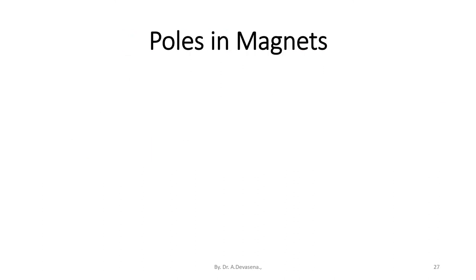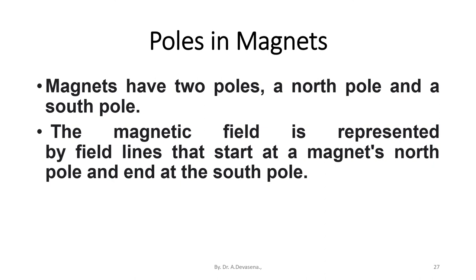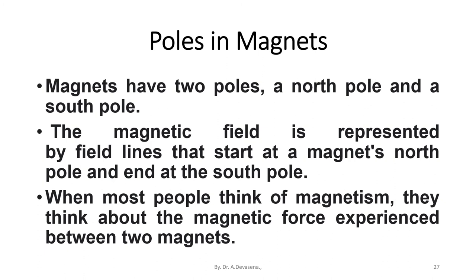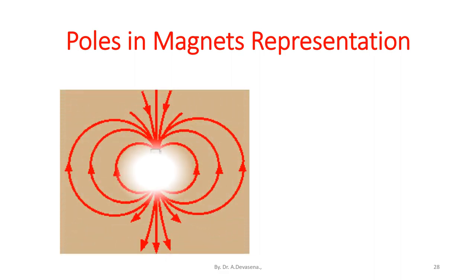Magnets have two poles: a north pole and a south pole. The magnetic field is represented by field lines that start at a magnet's north pole and end at the south pole. When most people think of magnetism, they think about the magnetic force experienced between two magnets. Here is a representation of a north pole, south pole, and magnetic lines in a magnet.